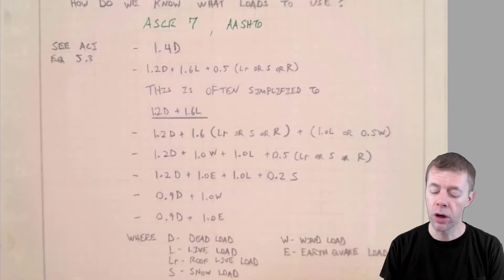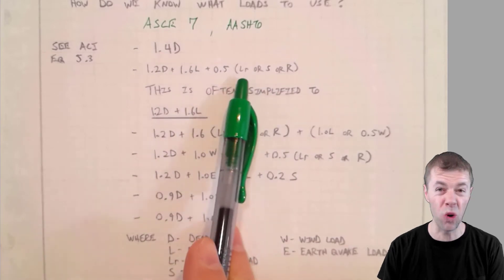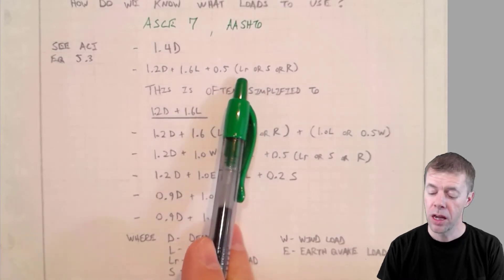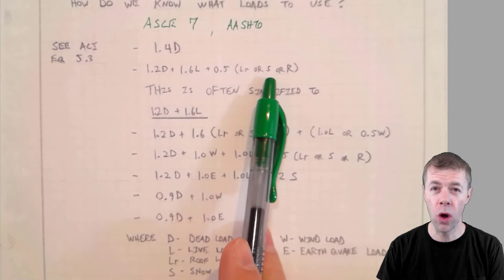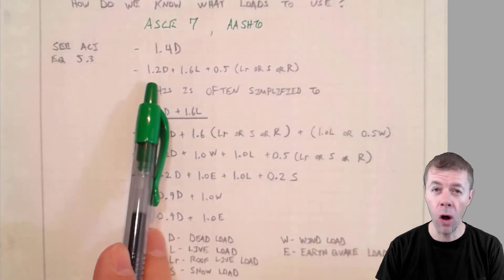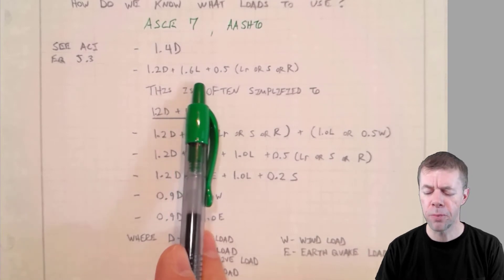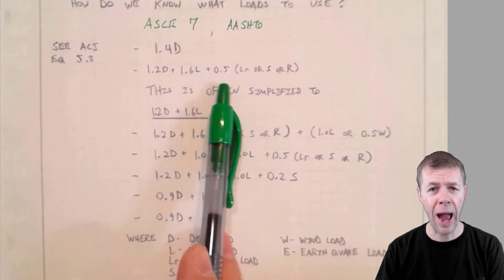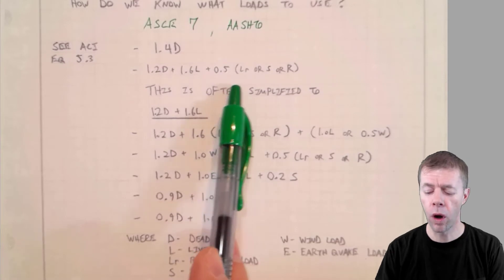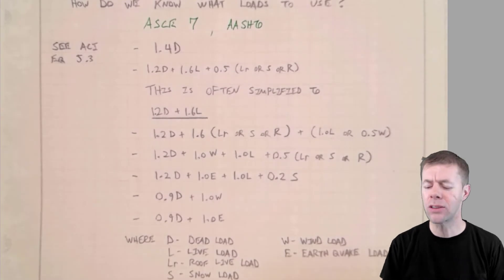But now, if I'm designing for dead load and live load, or maybe something else, this LR is roof live load. We have S for snow load, and we have R for roof rain load. So if we're designing for all the dead load, and we're designing for all the live load, this is pretty interesting. I don't have to design for 100% of any one of these other loads. I get to only use half a load factor.